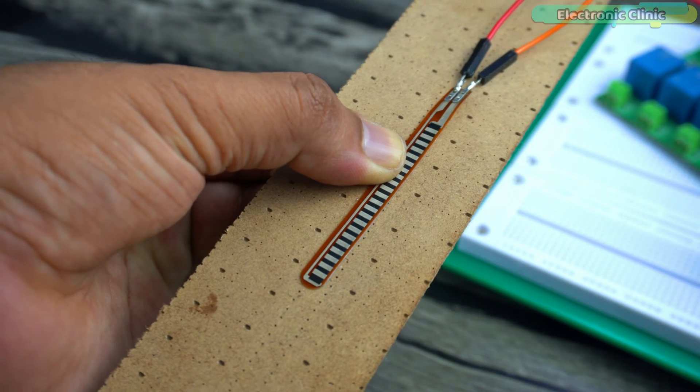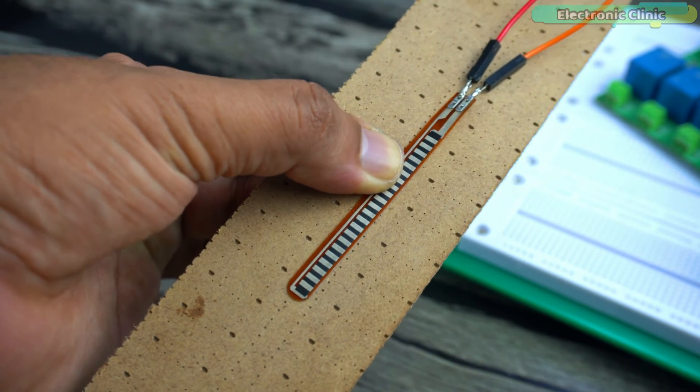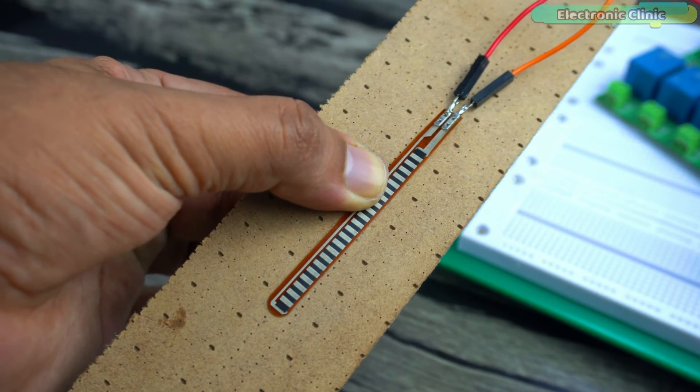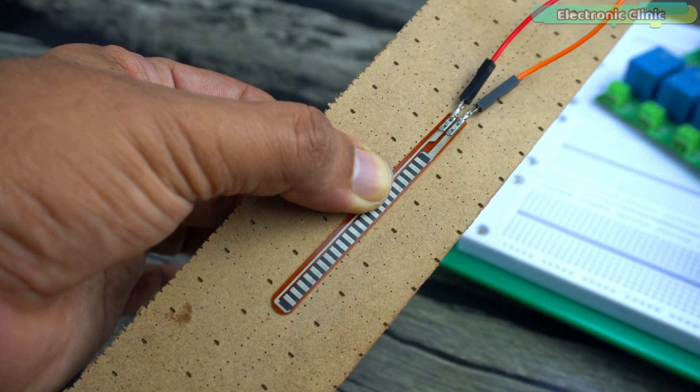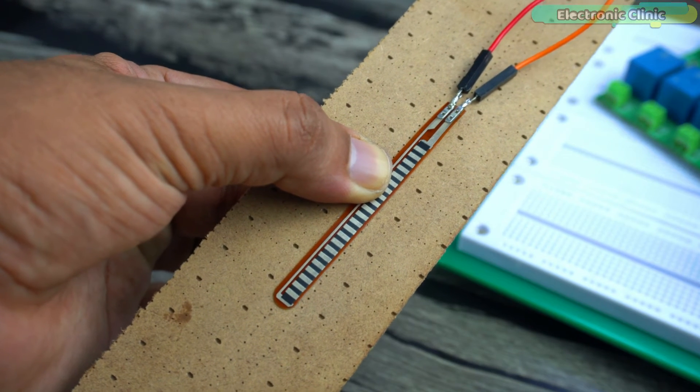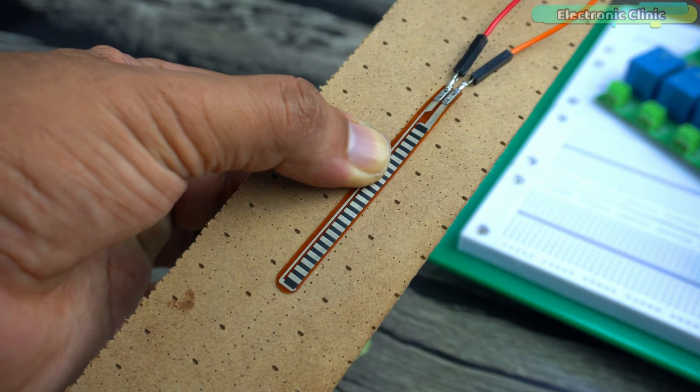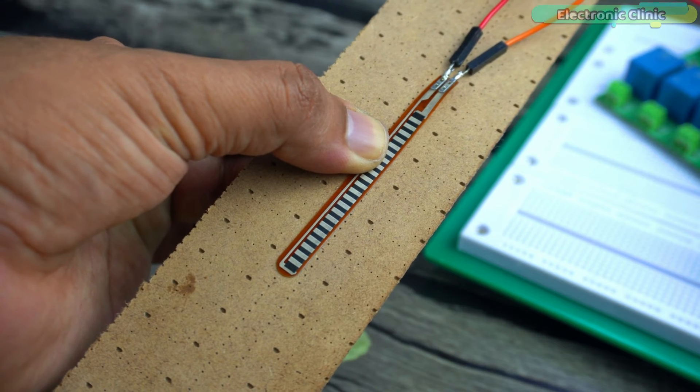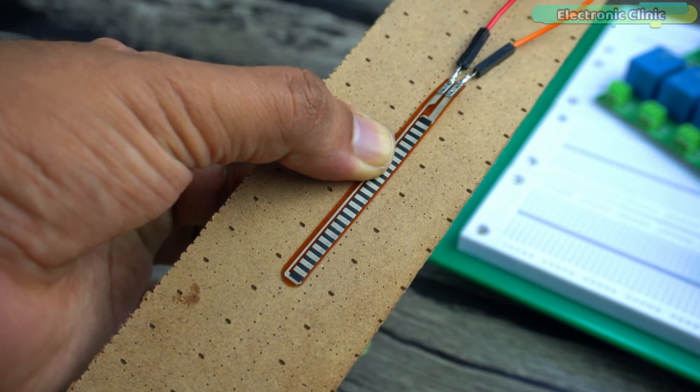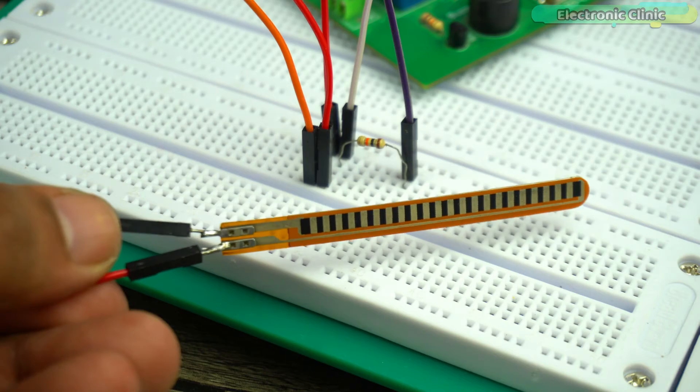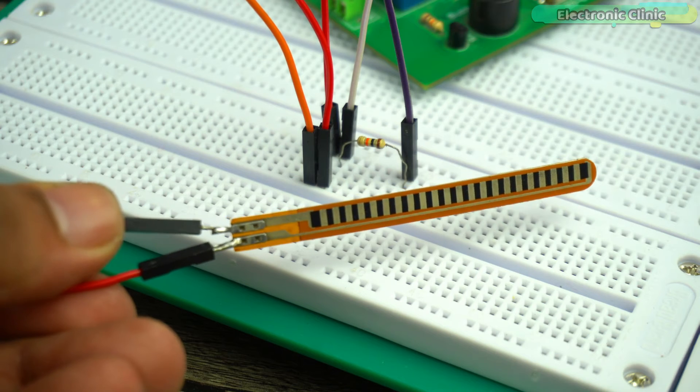You might be thinking, what's the advantage of this setup? Well, as you know, this wooden sheet can bend up to a certain limit. If we cross that limit, the sheet will break. So I want that when the wooden sheet bends beyond a certain limit, the buzzer should turn on, to prevent us from bending it further. The voltage divider circuit remains exactly the same.